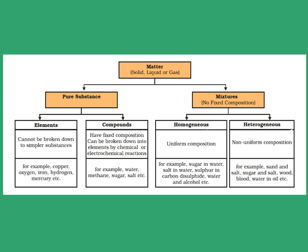Homogeneous mixtures have uniform composition throughout; for example, sugar in water, salt in water, etc. Whereas heterogeneous mixtures have non-uniform composition. Examples of heterogeneous mixtures are sand and salt, sugar and salt, wood, blood, water and oil, etc.